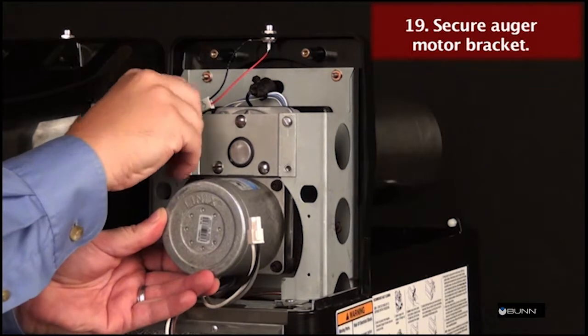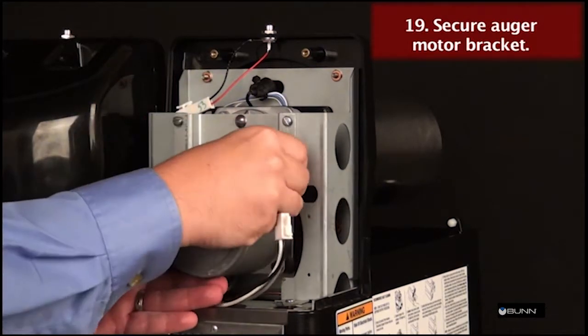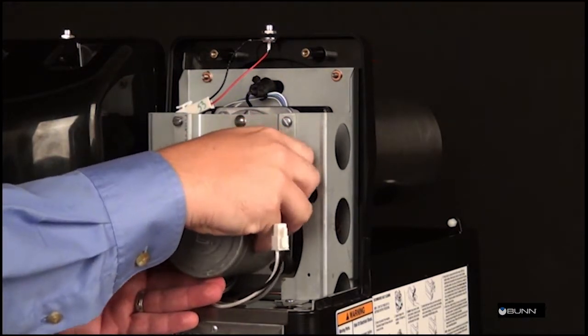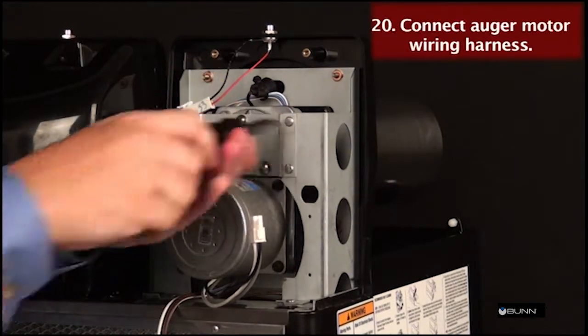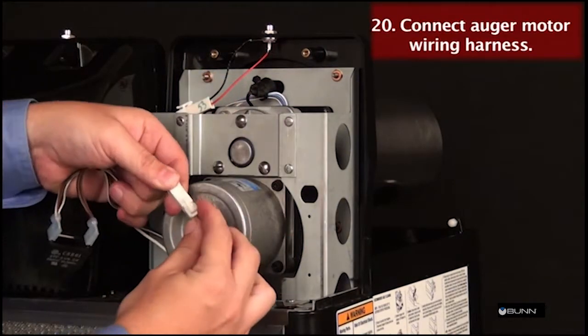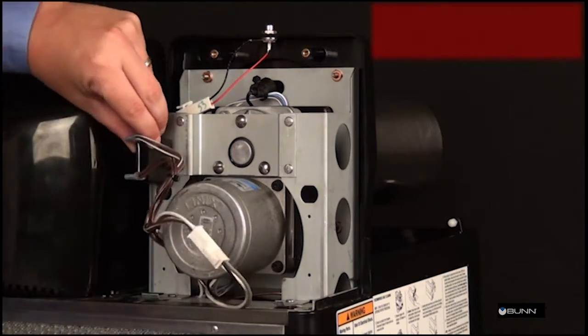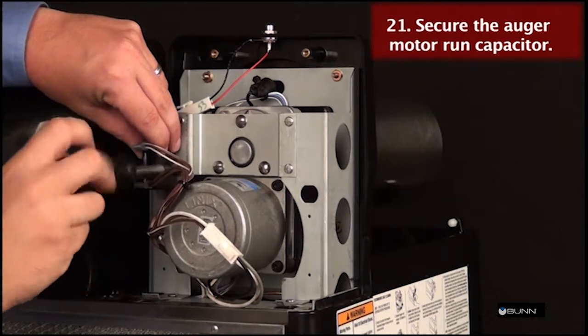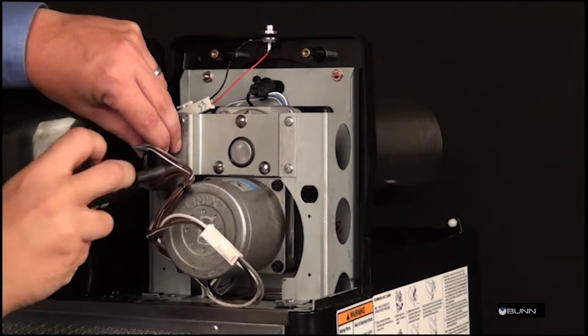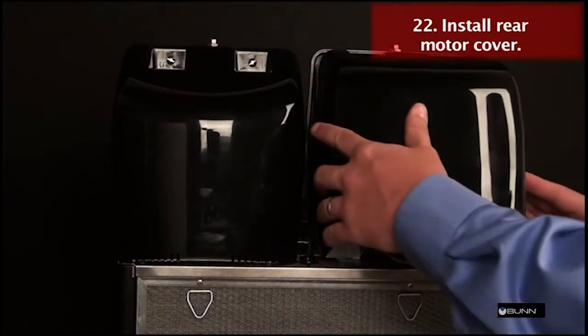Secure motor and capacitor to cooling drum mounting bracket. Connect auger motor wiring harness. Secure run capacitor to mounting bracket. Install rear motor cover.